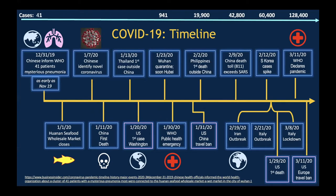This is an overview of the COVID-19 timeline beginning from the World Health Organization's report from the Chinese about 41 patients with a mysterious pneumonia. These cases may have been present as early as mid to late November. It was very quickly after that time point that they closed the famous Wuhan seafood wholesale market. Within about a week, the Chinese had identified a novel coronavirus, and not long after that had the first death in China on January 11th. The first spread outside China was to Thailand on January 13th. The first case in the United States was January 20th in the state of Washington.